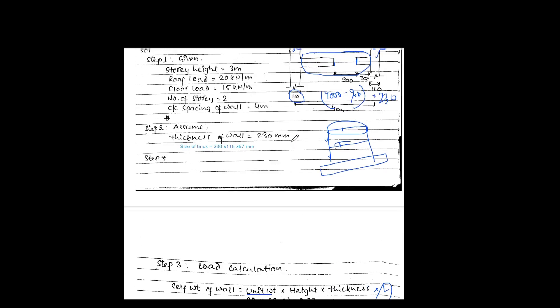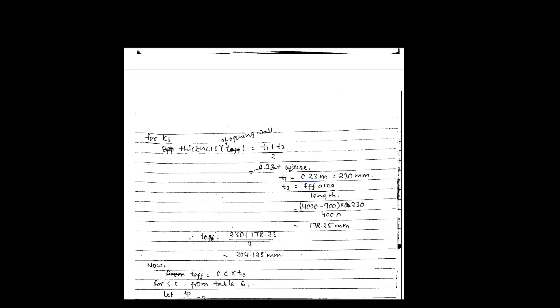t1 is the wall thickness at the location of the opening: 0.23 m (230 mm). t2 is found from the effective area: (4000 − 900) × 230 ÷ 4000 = 178.25 mm. The average opening wall thickness = (230 + 178.25) / 2 = 204.125 mm. This is our effective thickness for the opening wall.